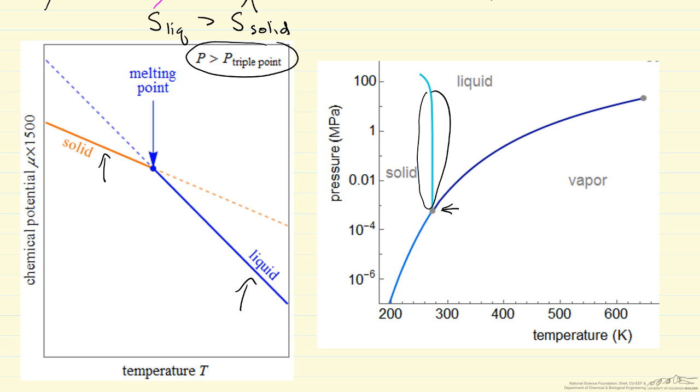The relation between these two diagrams as to which is the stable phase is related to which has the higher entropy. When we change the temperature, we see the liquid chemical potential changes more with temperature than the solid.